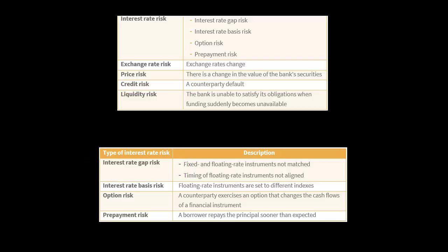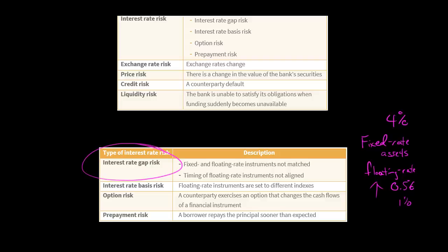A couple examples of interest rate gap risk: if you had fixed and floating rate instruments that weren't matched. For example, if you had fixed rate assets — say some 30-year fixed rate mortgages at an interest rate of 4% — and then you had floating rate liabilities at, let's say, 0.5%. The bank has a margin of 3.5%. But what if the interest rate goes up? Now the floating rate goes from 0.5% to 1%, and the bank's margin has shrunk to just 3%. That's one example of interest rate gap risk.